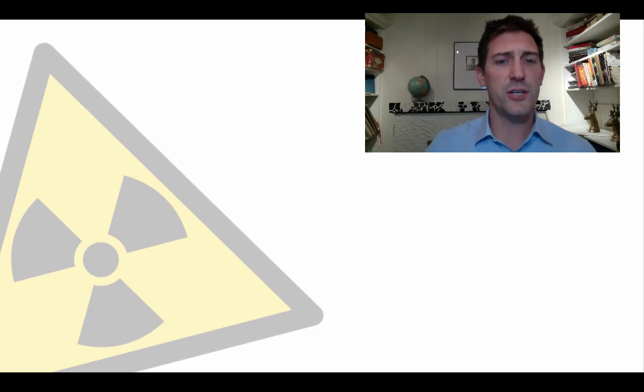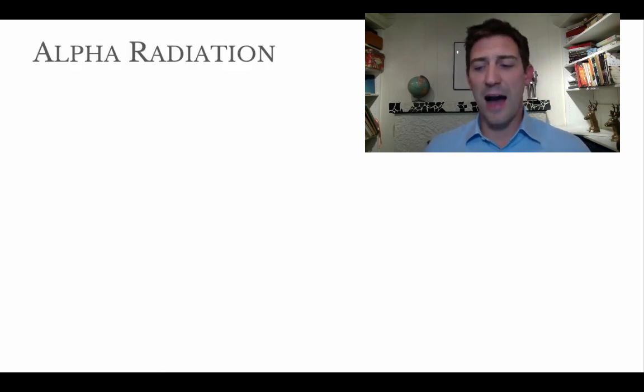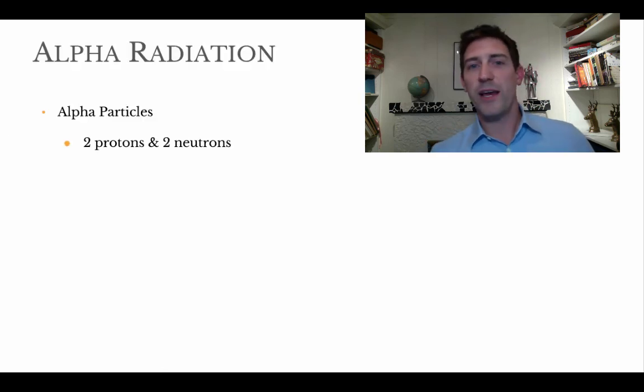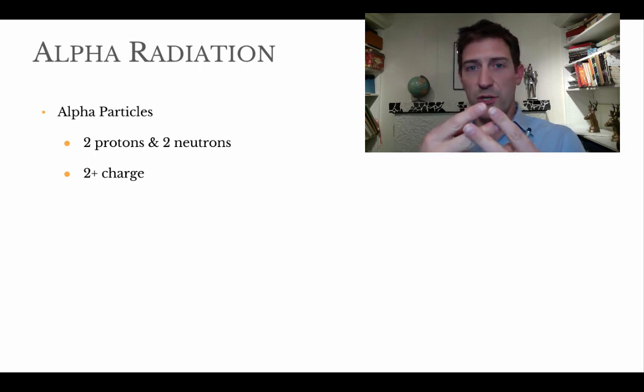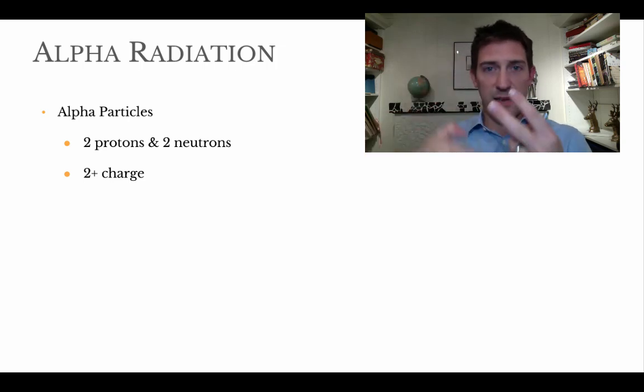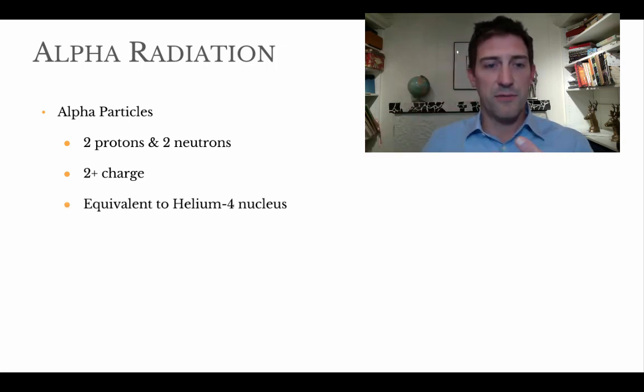So three types of radiation. The first type is alpha radiation. Alpha radiation is made up of alpha particles. An alpha particle is something that has two protons and two neutrons inside the nucleus. So it's got an overall two plus charge, because think about it, two protons, neutrons don't have a charge. There's no electrons to even that out. So it's got a positive two charge.